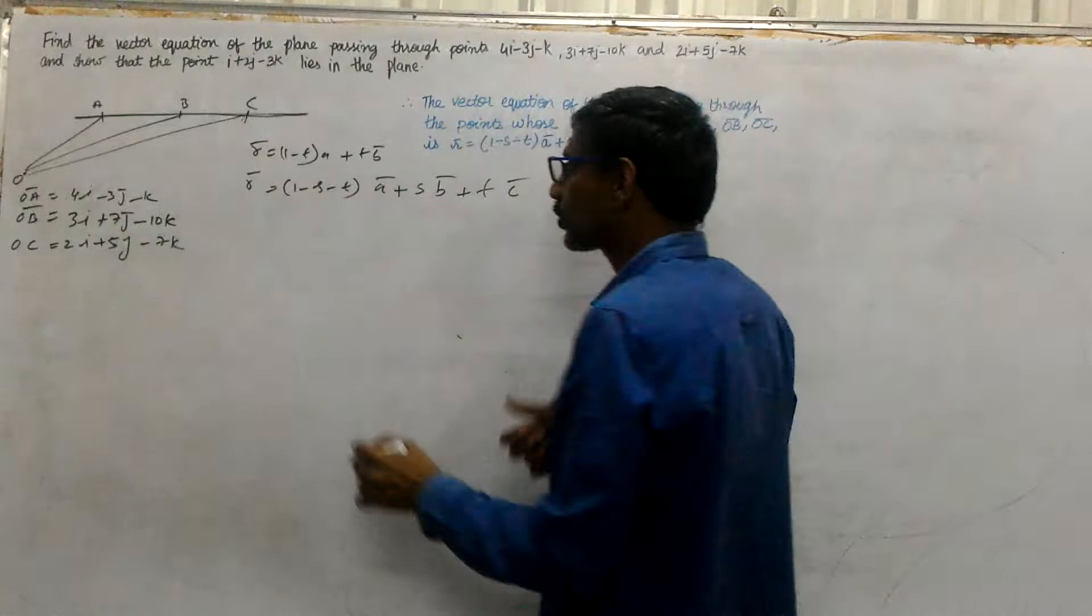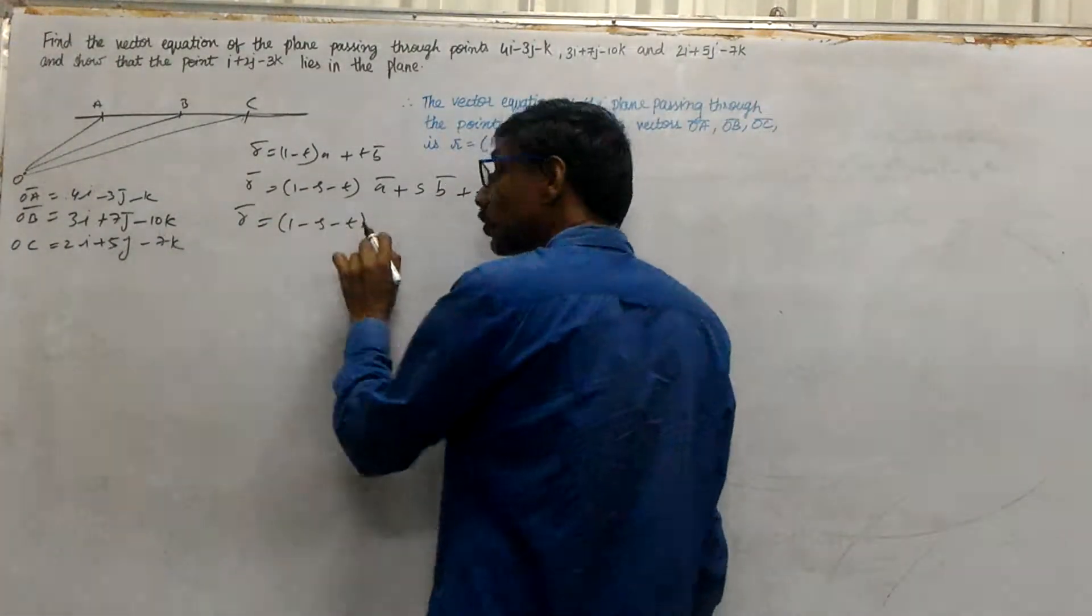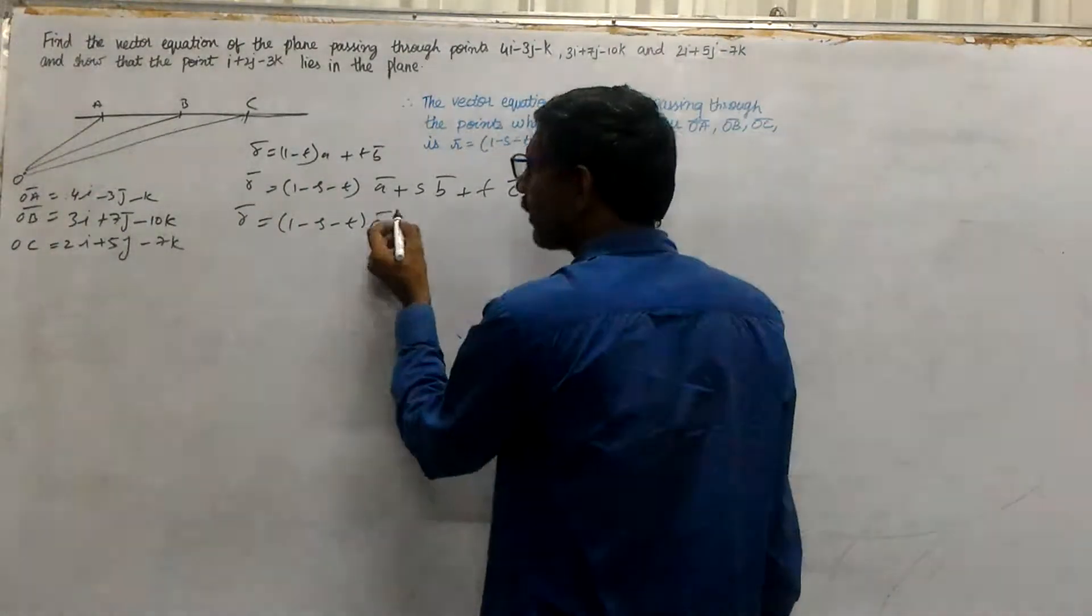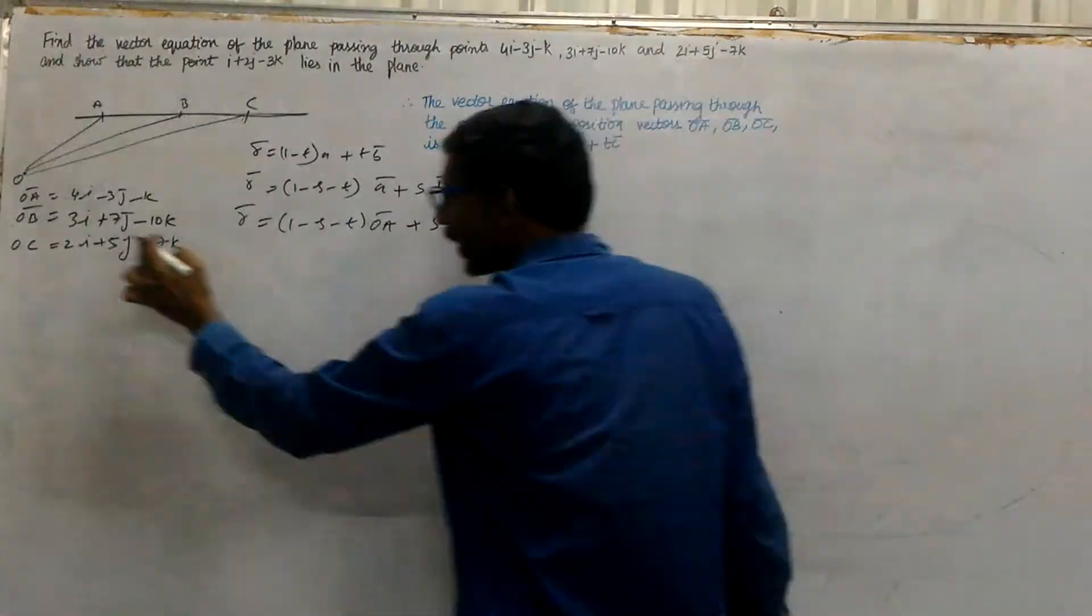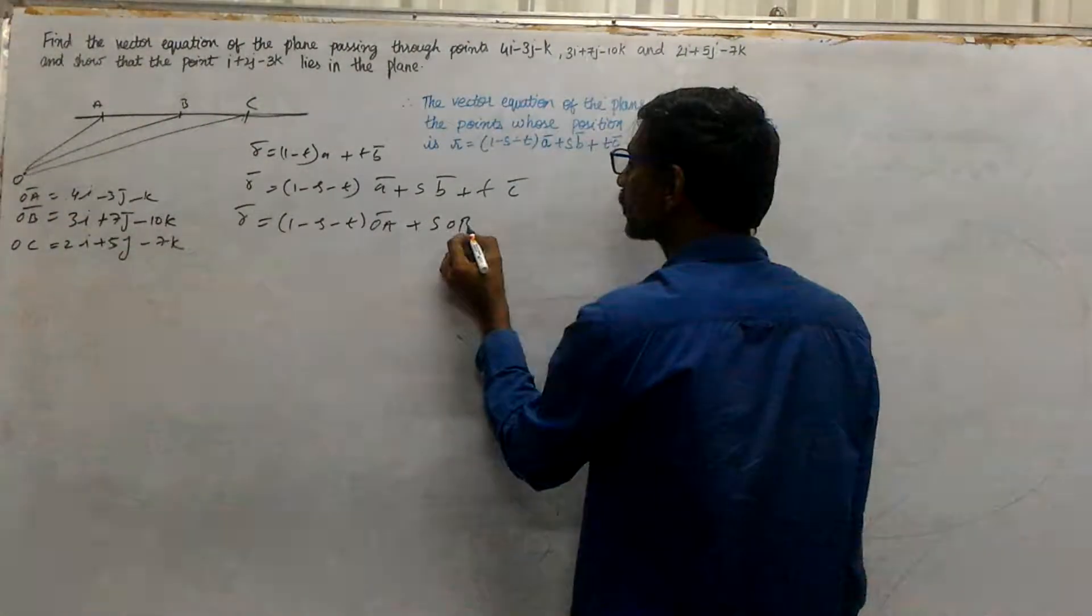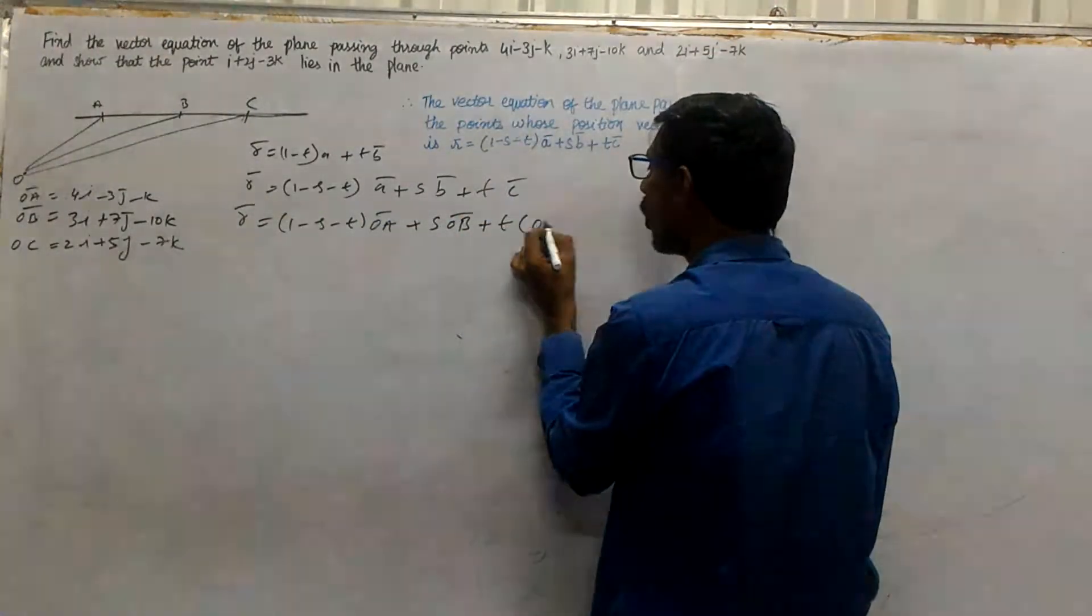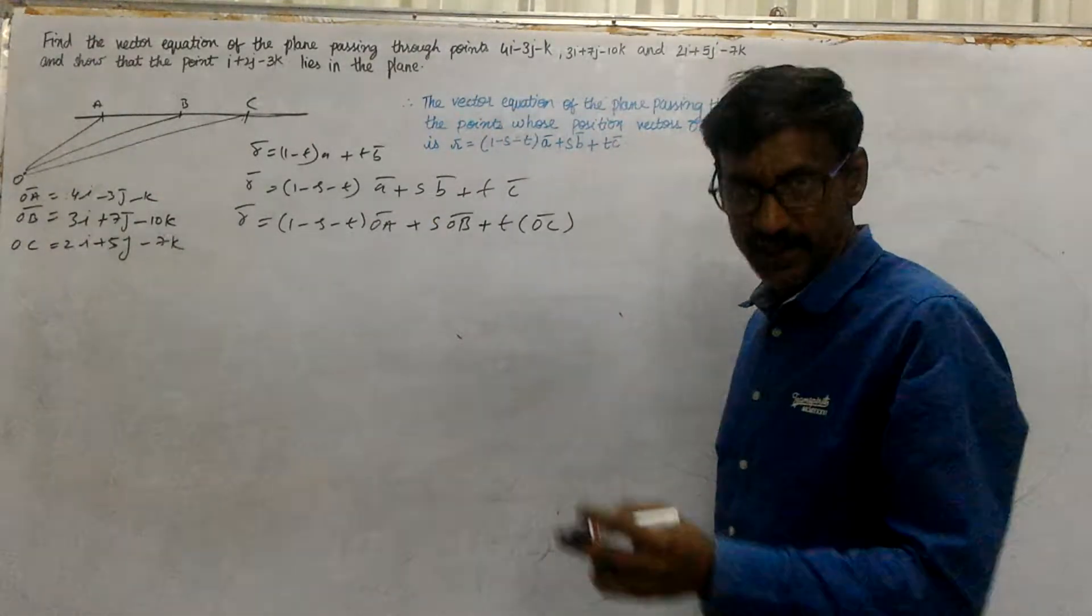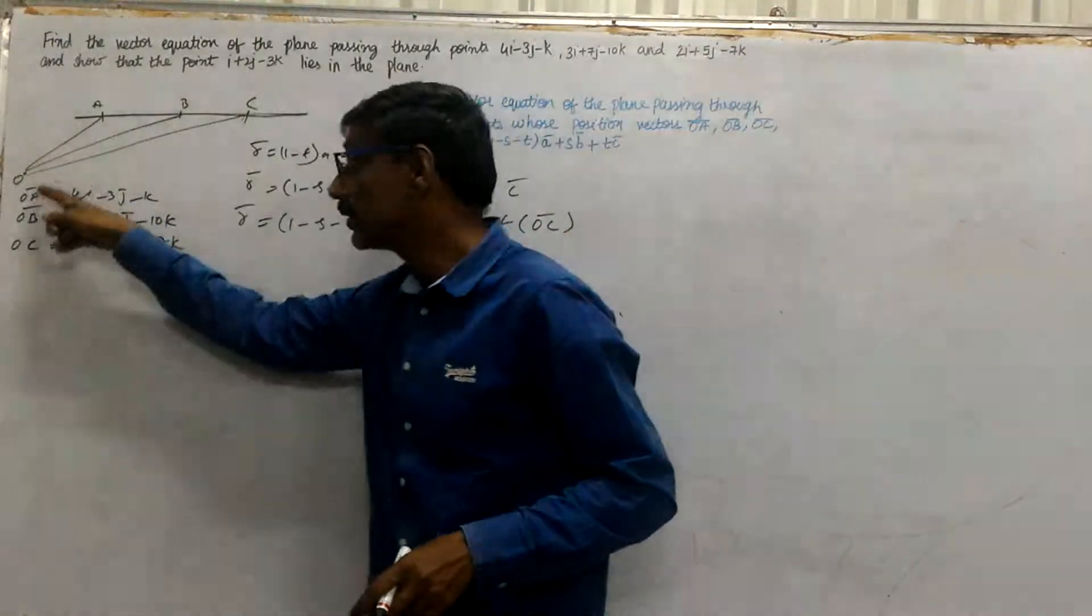So R bar equals (1-s-t) OA bar plus s into OB plus t into OC. This is the vector equation passing through the 3 points.